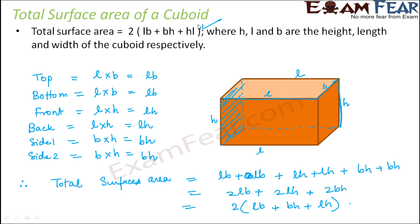We say total surface area is 2 into LB plus BH plus LH where H, L and B are height, length and width of the cuboid respectively.